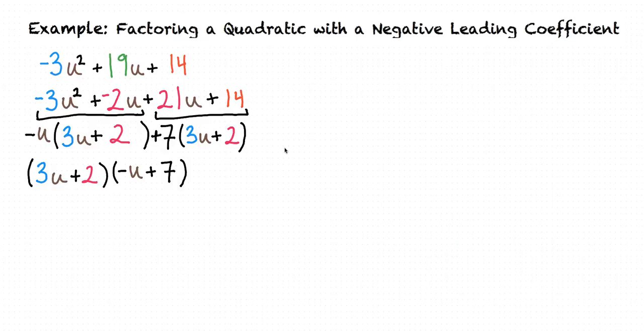Now just for the sake of curiosity, what would have happened if instead of factoring out a -u from these first two terms, we had just factored out a positive u? Let's see what would have happened. Then from these first two terms, we would have u times (-3u + -2).